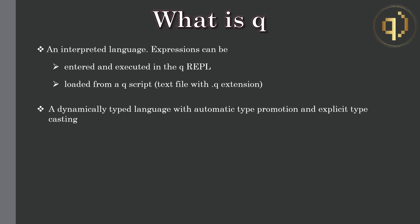Q supports automatic type promotion. For example, when you're trying to combine two different types, the smaller type is promoted or cast to the same type as the larger type. This is done automatically without the need for explicit casting.